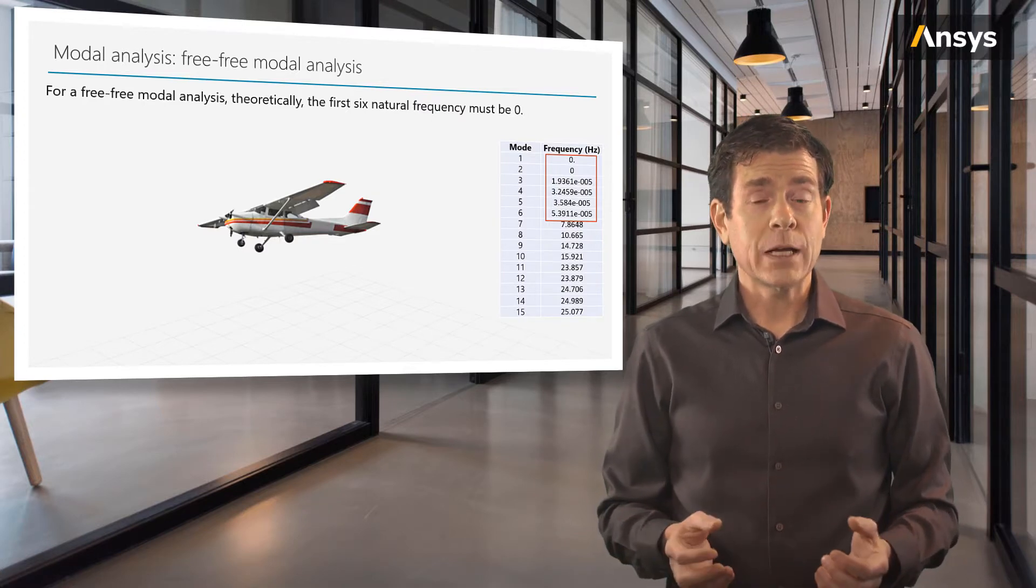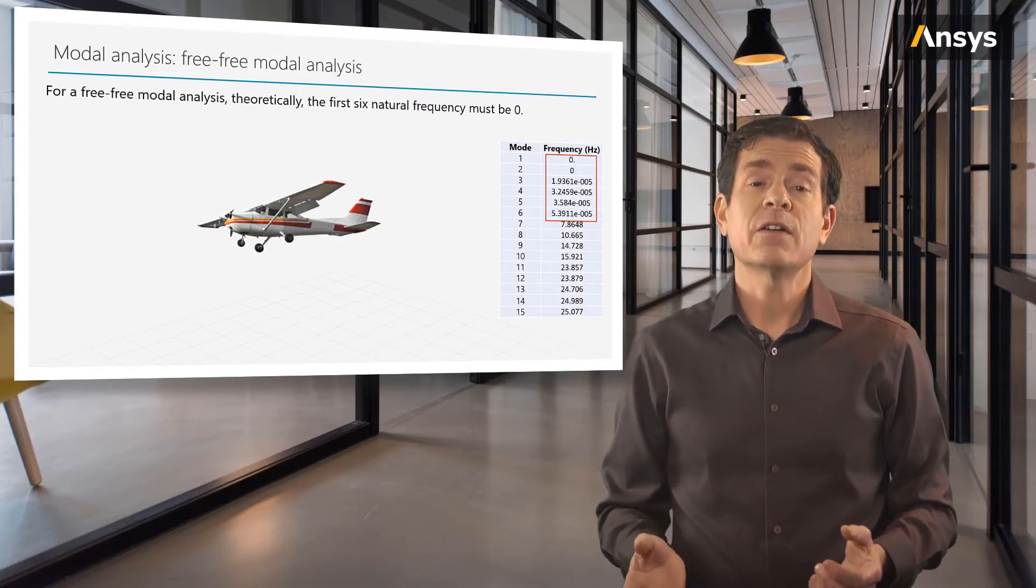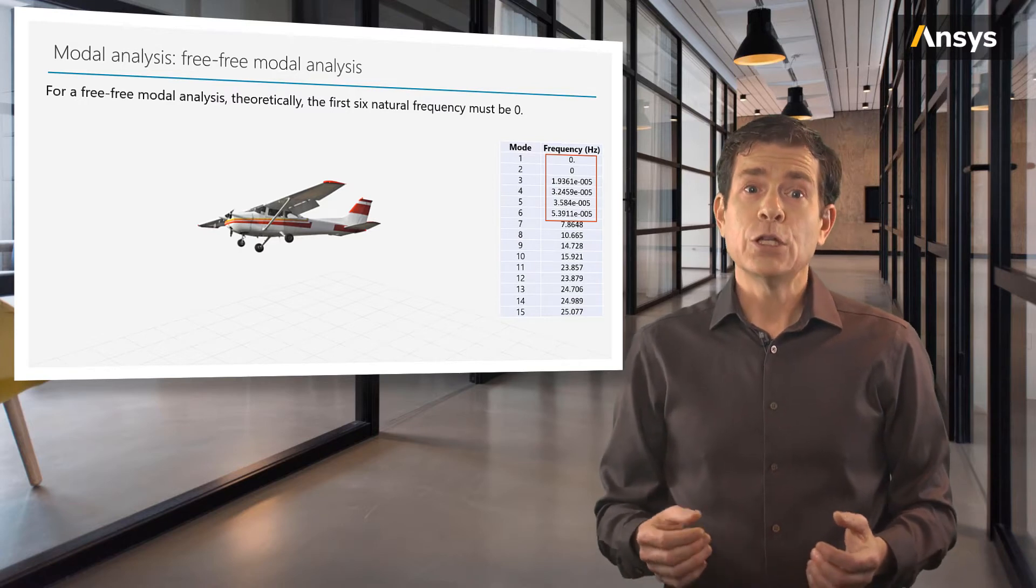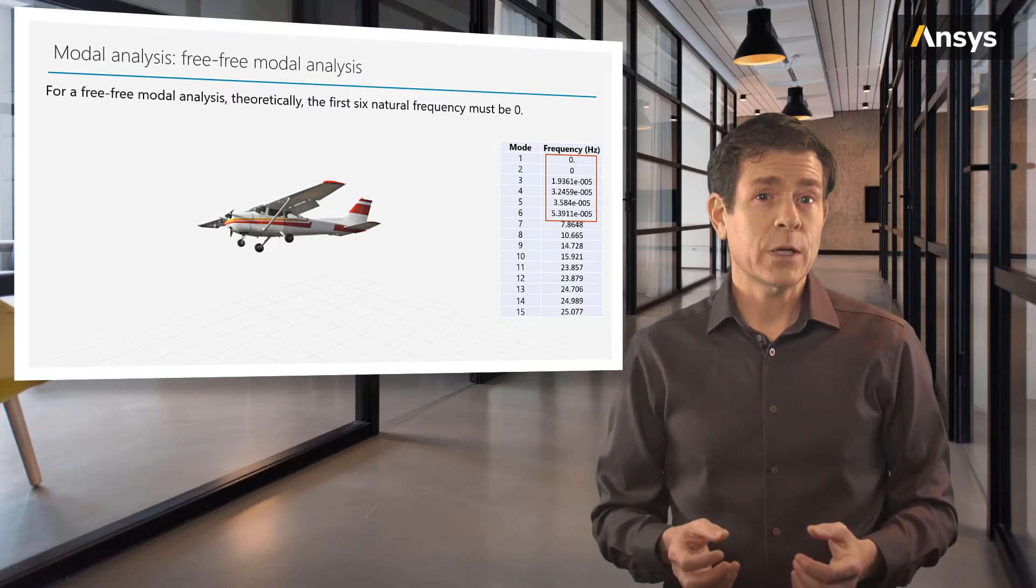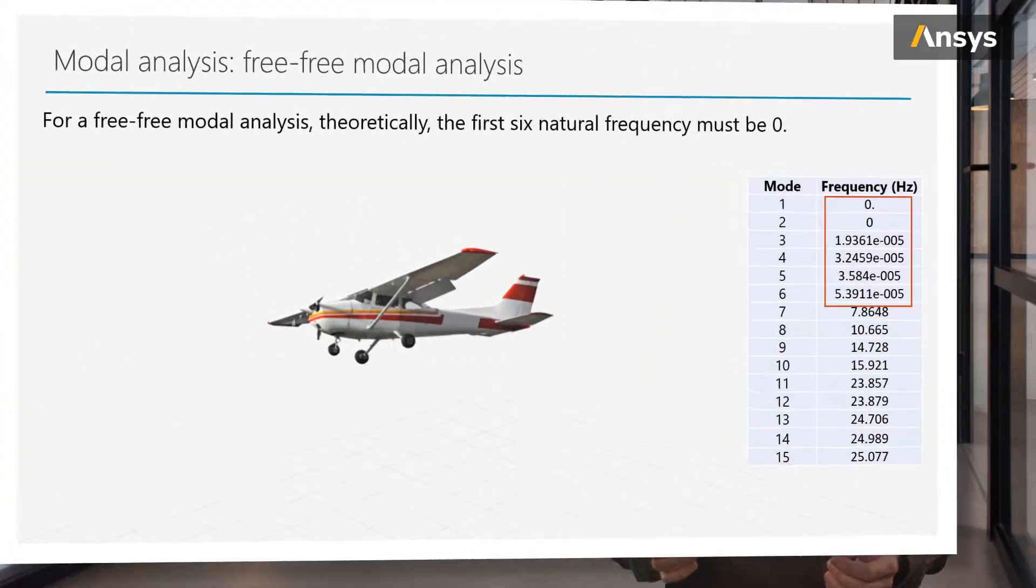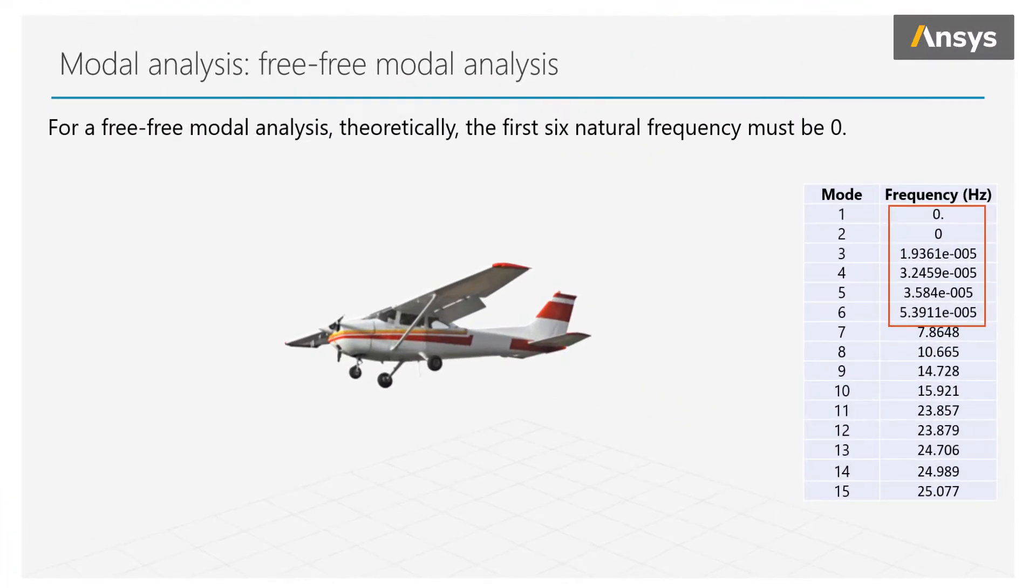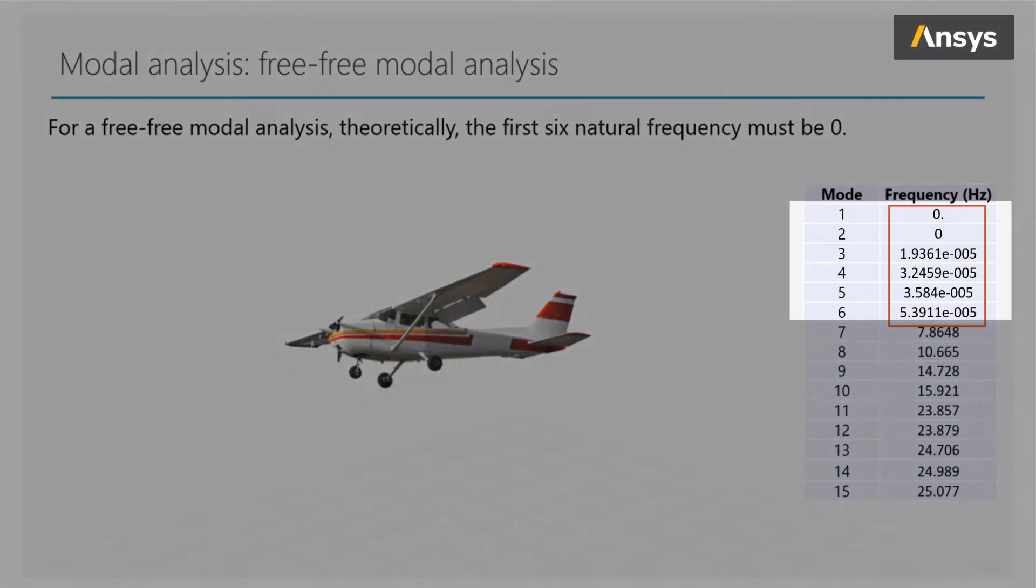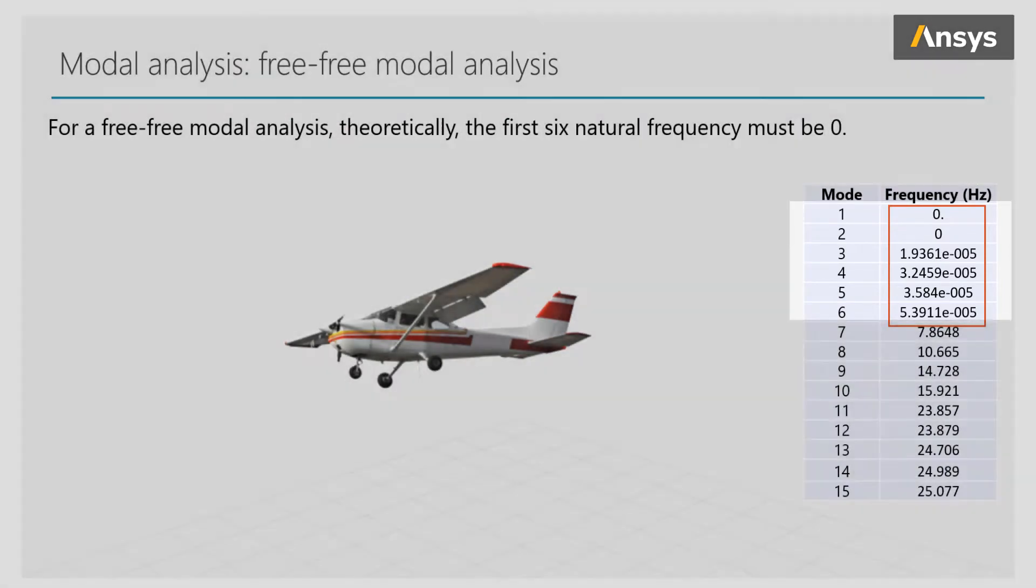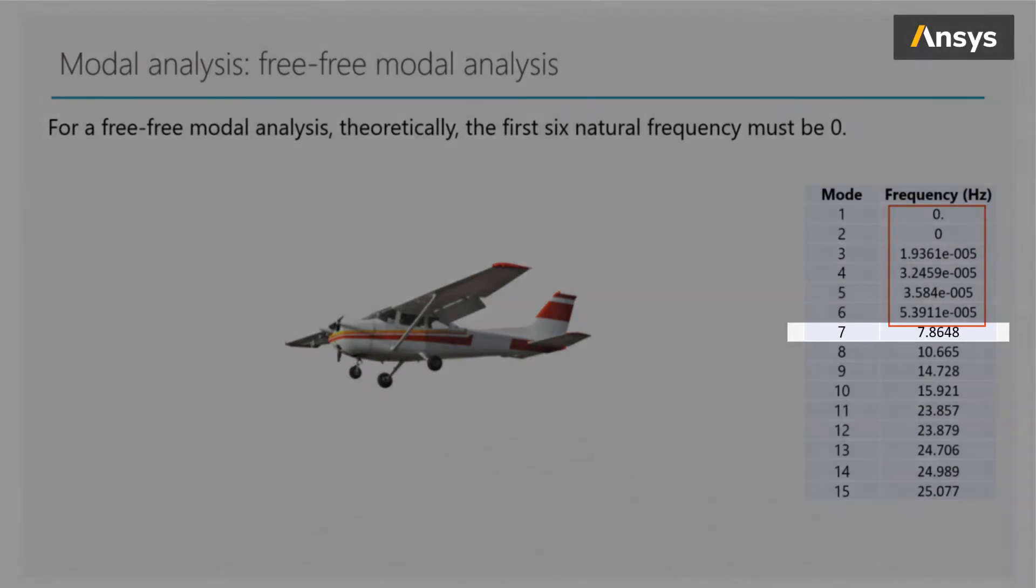Solving the free-free modal analysis numerically, for example using the finite element method, you might find the first six natural frequencies are not absolute zero, but they'll be numbers close to zero. In this example, our first six modes are zero or close to zero, and the seventh mode is the first flexible mode, which is non-zero.